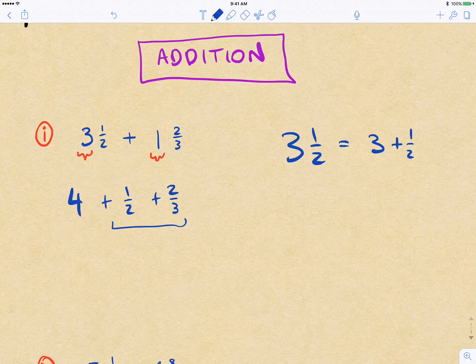Now, we'll see with subtraction, sometimes it's better to convert to an improper fraction first. That's not really the case with addition because it would make this next step a little bit harder. So here we've got 1 half plus 2 thirds.